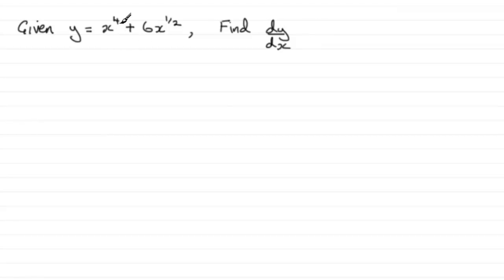So first of all, each of these terms are of the form ax to the power n. Remember if we've got something like the form y equals ax to the power n, when it comes to differentiating it, dy by dx always equals a multiplied by nx to the power n minus 1.